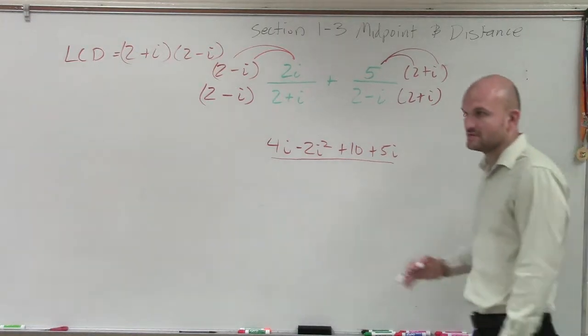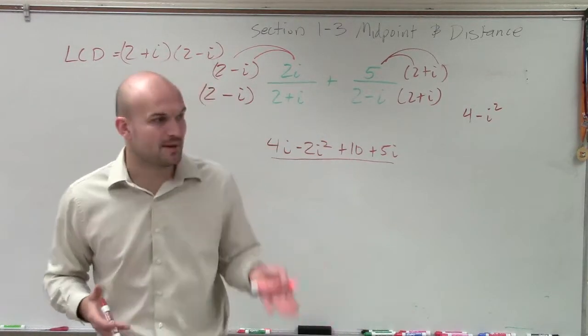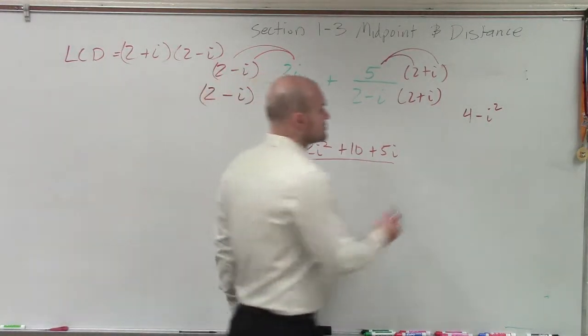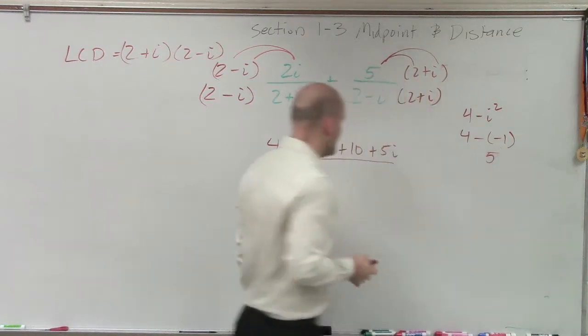Now, remember what we talked about last class, for those of you that need to remember i—remember i was represented by the square root of negative one, our imaginary unit. I said i², then, equals negative one. So really, this is 4 minus negative one, which equals 5.